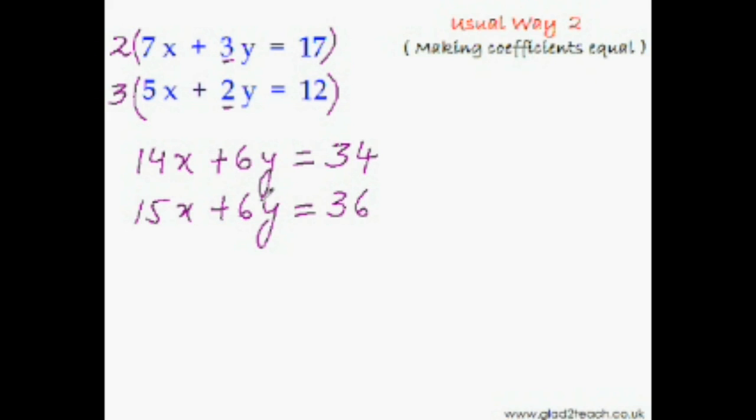So now we can easily cancel them out by subtracting this equation from this equation. And subtraction in algebra means changing the sign and then adding the terms. So this is positive 15x—it will become negative. This is positive, so it will become negative. This is positive, so it will also become negative.